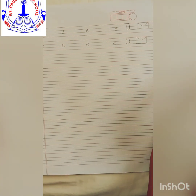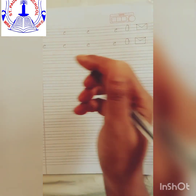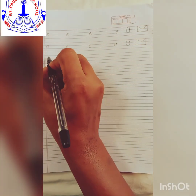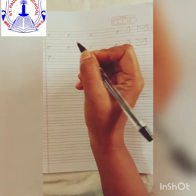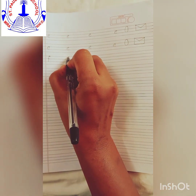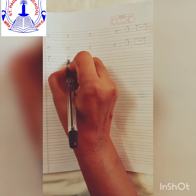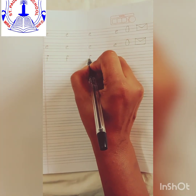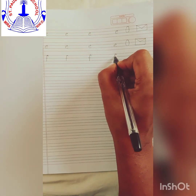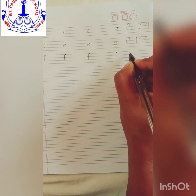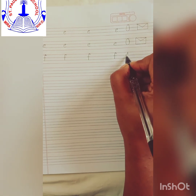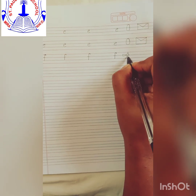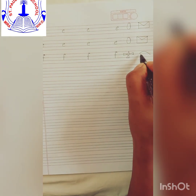What comes after E? After E, we are going to write the small letter F: small curve, standing line and a small sleeping line. This is F. F says 'f': fan, fish.